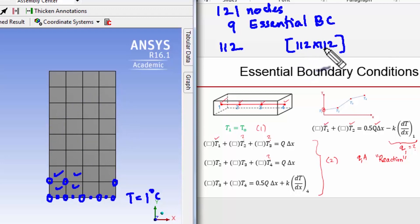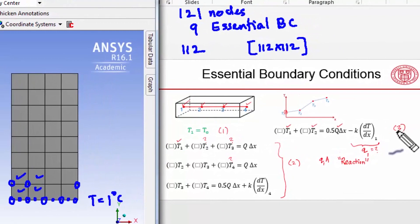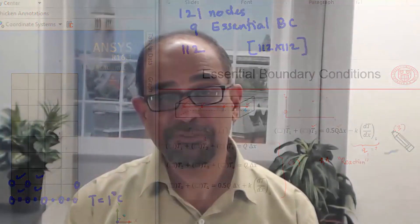It inverted that matrix, and now we have all 121 temperature values. We'll do step three later on when we go to check the energy balance. Now that we have all 121 temperature values, let's get ANSYS to do the post-processing for us.